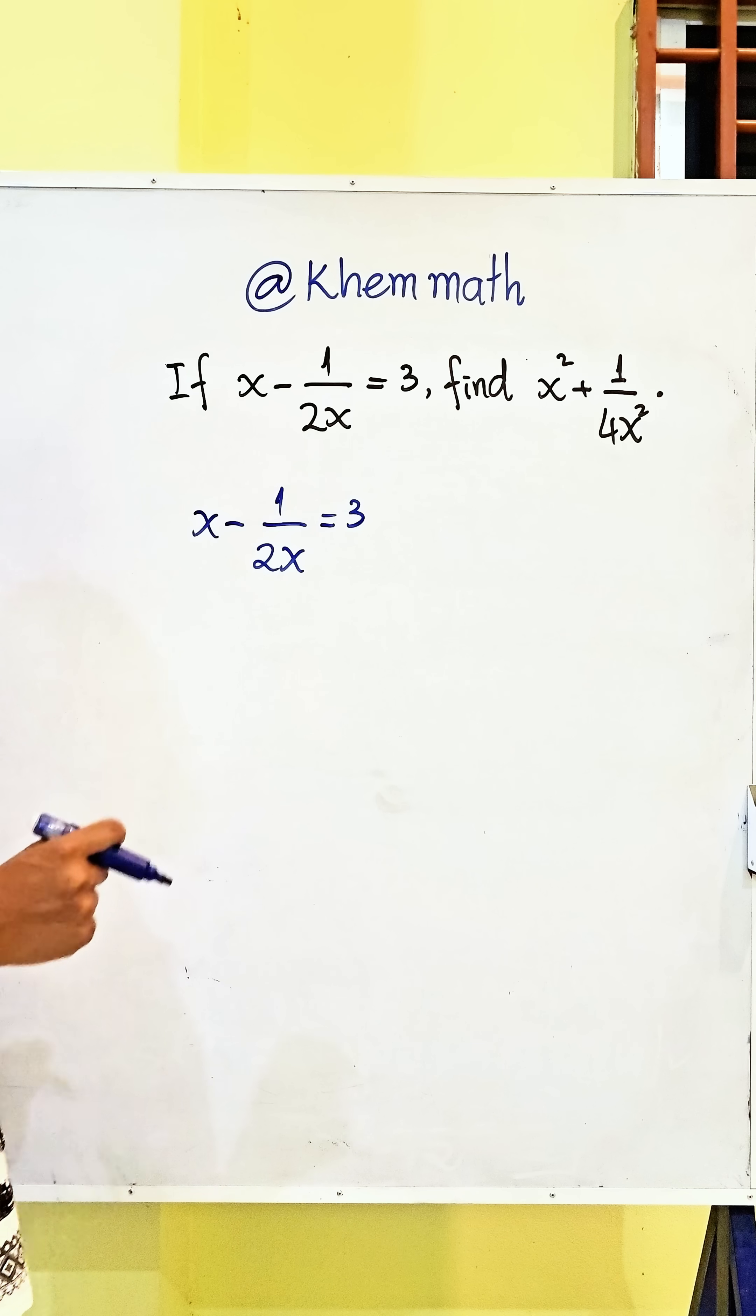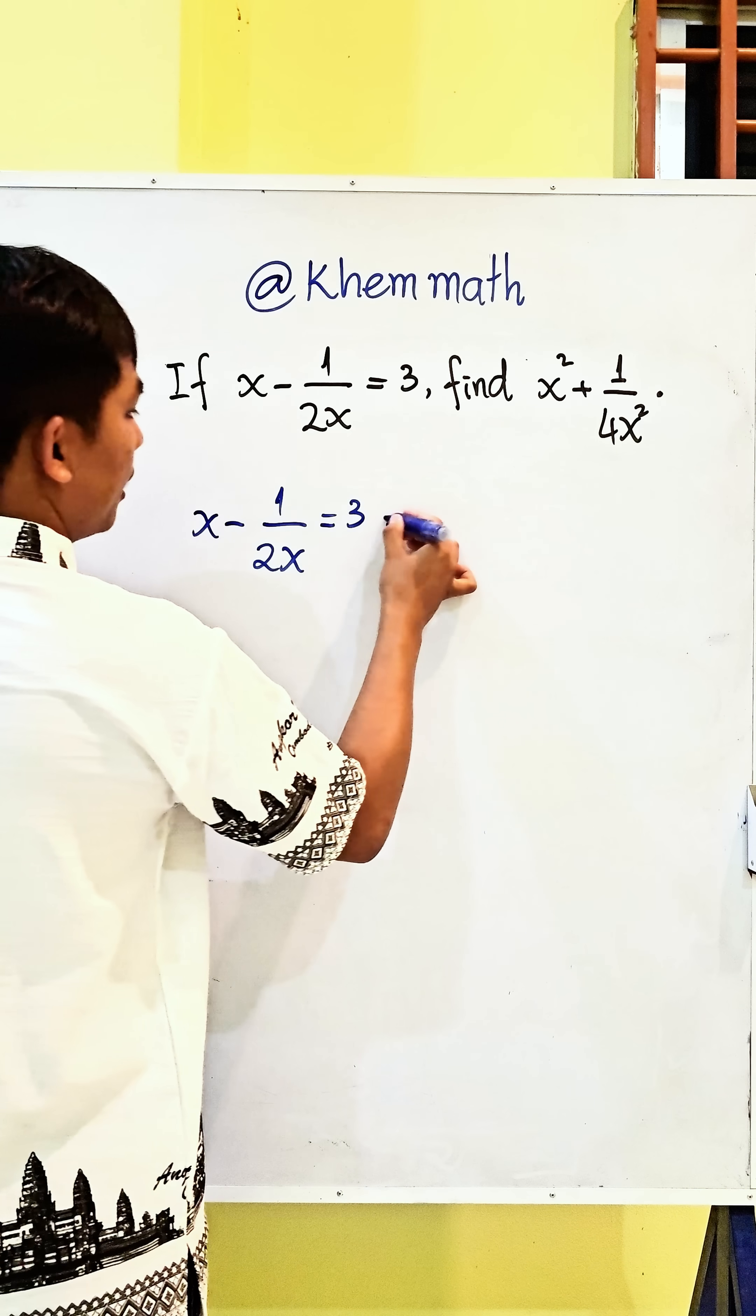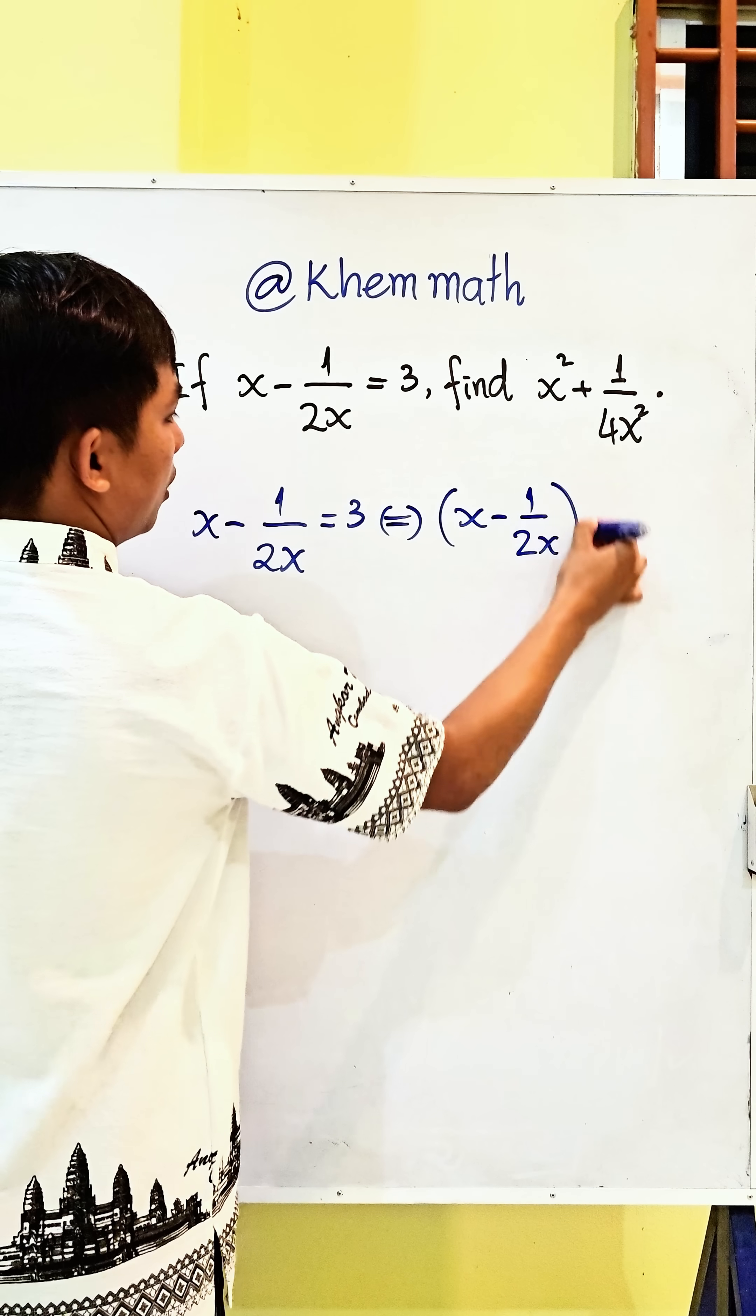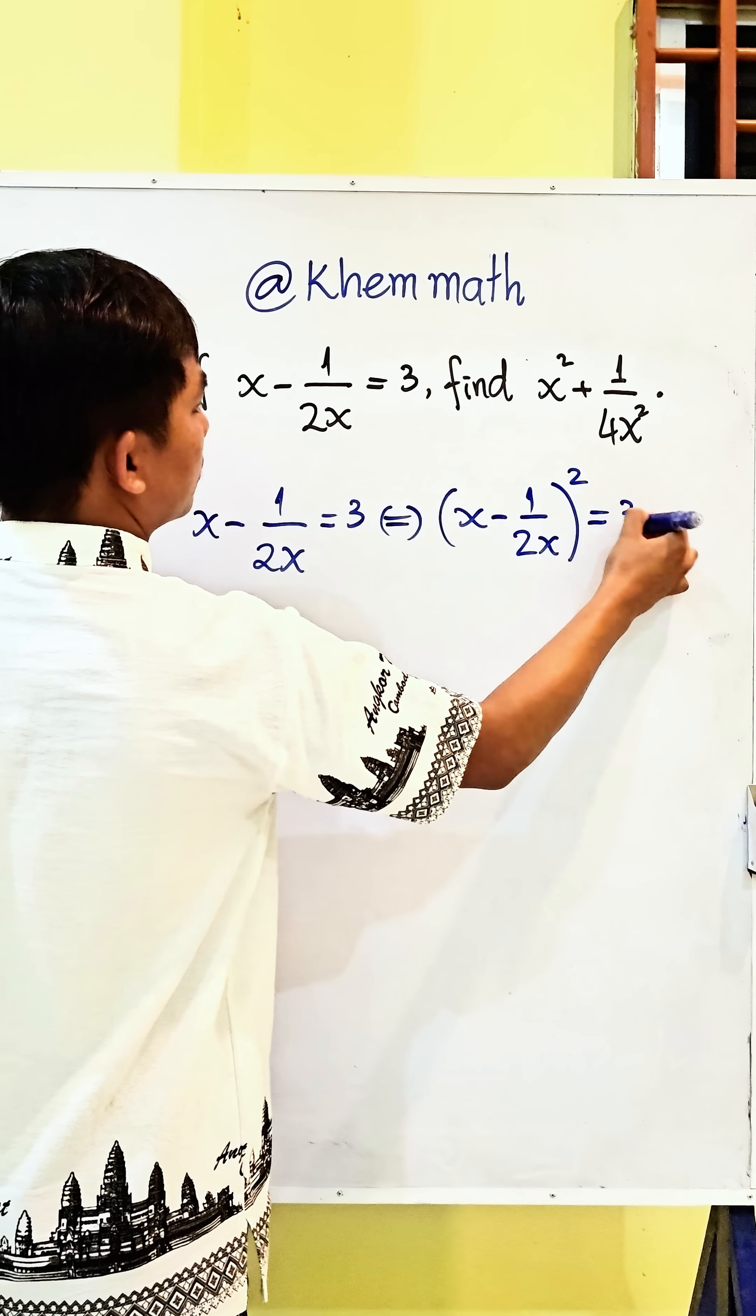First we write both of this equation to square. So here we get x minus 1 divided by 2x, squared, equals 3 squared.